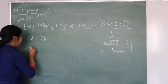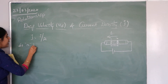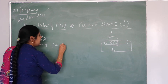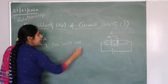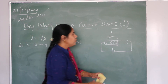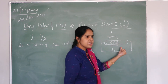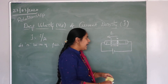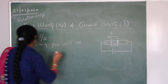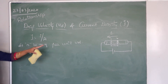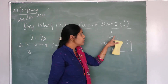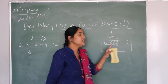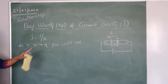Let N be the number of electrons which are present in the conductor per unit volume — the free electron density. Here the charge carriers are electrons. Because of the electric field, the electrons will attain some velocity, and that will be called drift velocity, represented by VD. So VD is the drift velocity attained by the electrons.